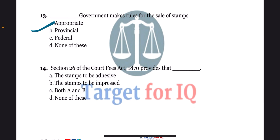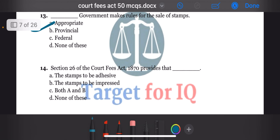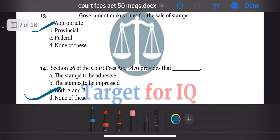Next question: section 26 of the act provides that dash. The options are A. The stamps to be adhesive, B. The stamps to be impressed, C. Both A and B, or D. None of these. The correct answer is option C. Both A and B.